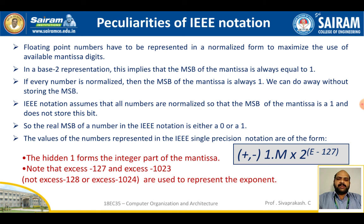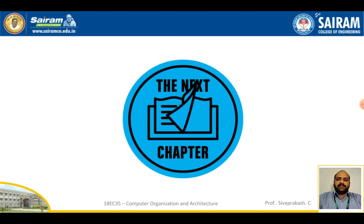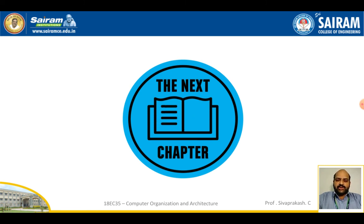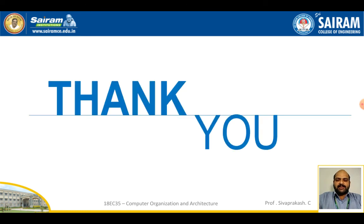Floating point numbers are always represented in IEEE notation, either as 32-bit single precision or 64-bit double precision. With this, I conclude the first module. We will see the next chapter in a new video. Thank you for your patience in listening.